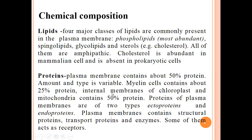What is the chemical composition of cell membranes? Cell membrane has lipids — a lipid bilayer — and proteins. Different types of proteins help different ions to move and transport, while lipids hold the structure together. Four major classes of lipids are commonly present in the plasma membrane: phospholipids, which are the most abundant; sphingolipids; glycolipids; and sterols, also known as cholesterol. All of them are amphipathic.